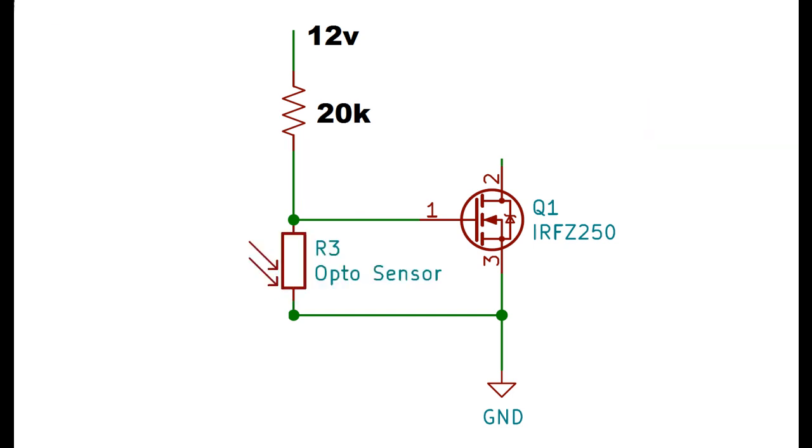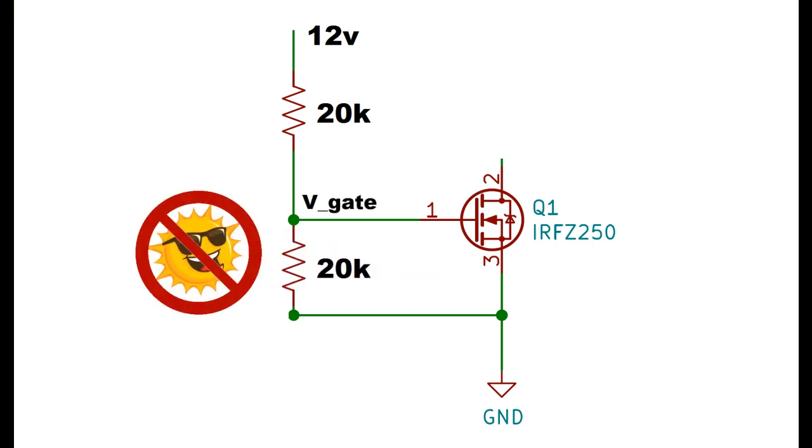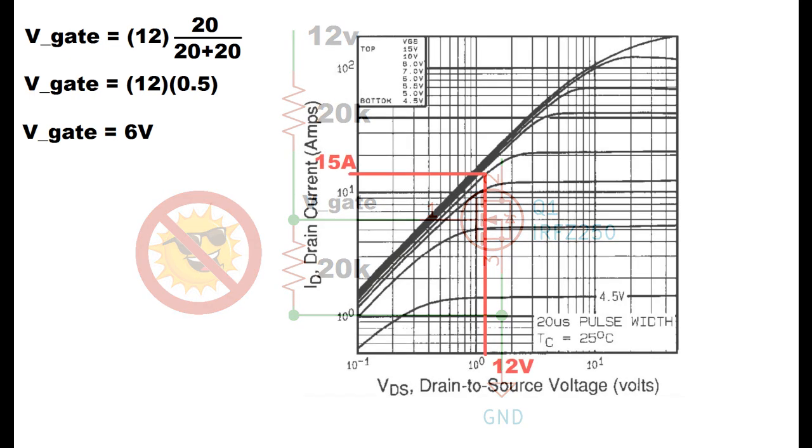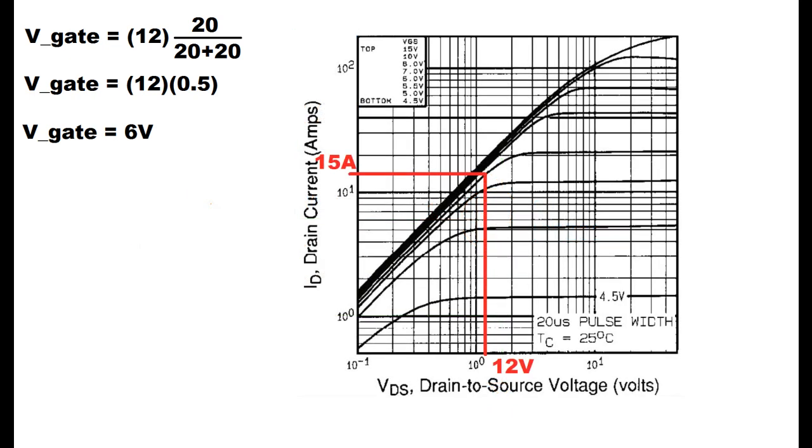But as we saw if we block the light path with the metal sphere the resistance goes up to 20k or more. If we use the formula for a resistor divider again we find that we get 6 volts on the gate when the path of light is blocked. Referencing graphs from the datasheet for our MOSFET we find that this will supply more than enough current through the FET to energize the coil.